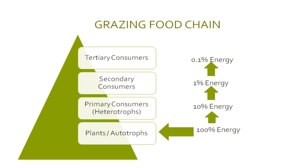In a grazing food chain, at the lowest trophic level are plants or autotrophs or producers, where 100% energy is available. Moving up, primary consumers or heterotrophs have 10% energy — decreased by the 10% rule. Above that, 1% energy is available at the secondary consumer level, and at the highest trophic level of tertiary consumers, only 0.1% energy is available.